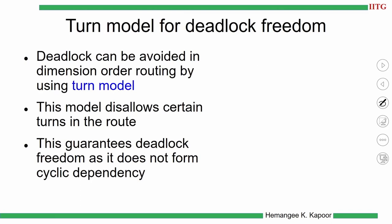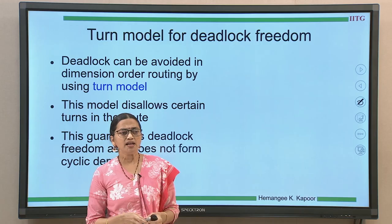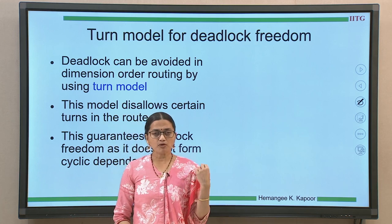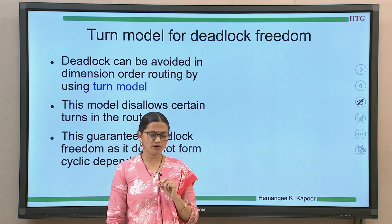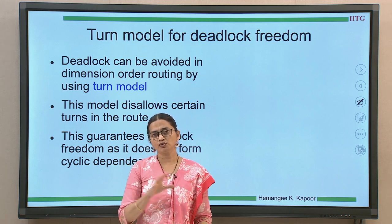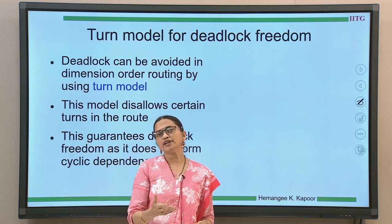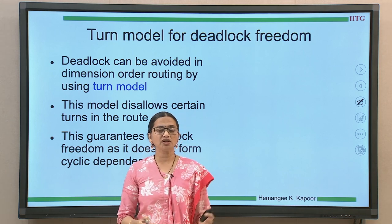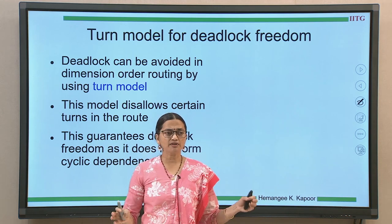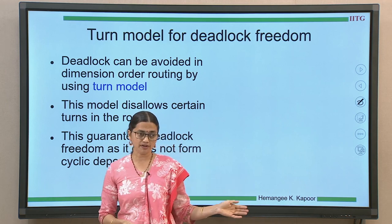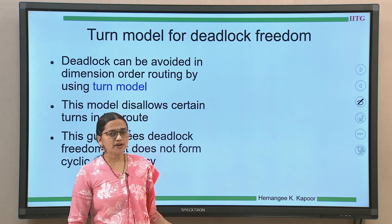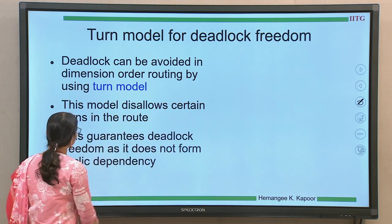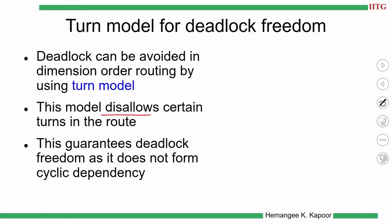Deadlock freedom using the turn model is very popular. We will look at it assuming a 2D mesh topology. The idea is to disallow certain turns so that a cycle cannot form. There are clockwise and counter-clockwise versions of turns, and by restricting specific turns we can guarantee deadlock freedom.